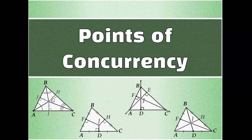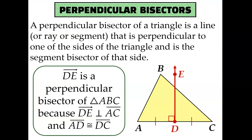Let's talk about points of concurrency and the special segments within triangles that create them. First, let's talk about perpendicular bisectors — their name pretty much tells you exactly what they are. A perpendicular bisector is a line, ray, or segment that is perpendicular to one of the sides of a triangle and is also the segment bisector of that side.